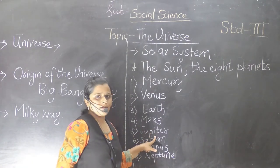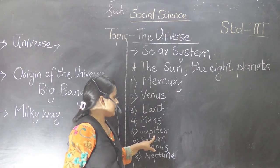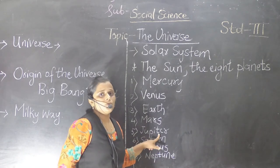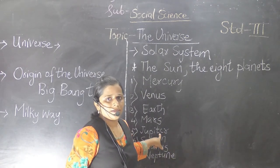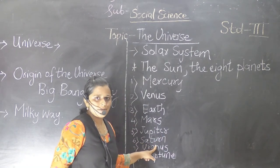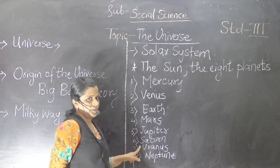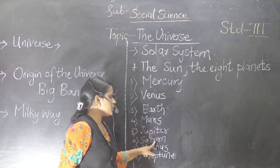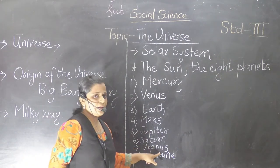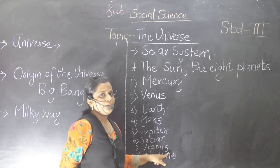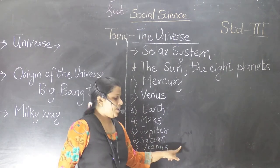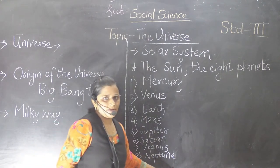The next fifth planet is Jupiter. Jupiter is the fifth planet in our solar system and is also known as the largest planet. Then the next planet is Saturn, which is the sixth planet and is also known as the ring planet. Then comes Uranus, which is blue and green in color because it has methane gas. The last, eighth planet is Neptune.